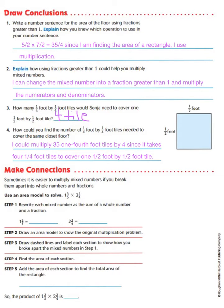So, now, let's try to connect it all together. Sometimes, it is easier to multiply mixed numbers if you break them apart into whole numbers and fractions. We're going to use an area model to solve 1 3/5 times 2 3/4.